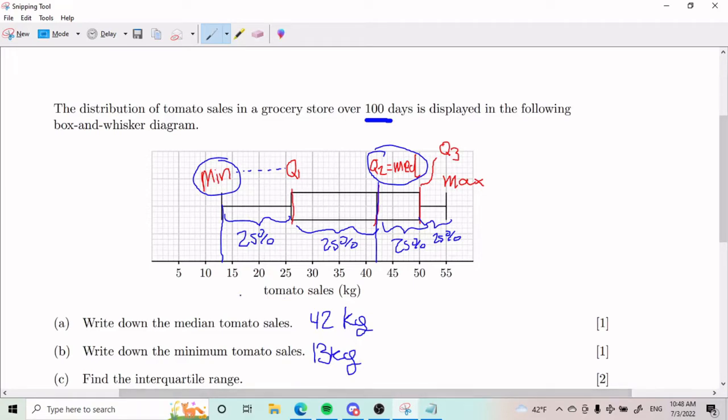Part C: interquartile range. This is actually in your formula booklet. It's just a fancy way to say that your IQR, interquartile range, is going to be Q3 minus Q1. Visually, it's the big part of your box and whisker plot, so that can also be a good way to remember it.